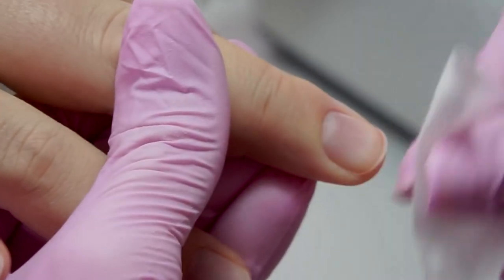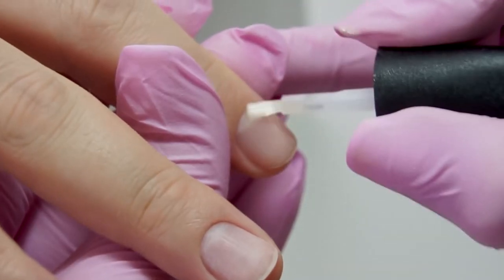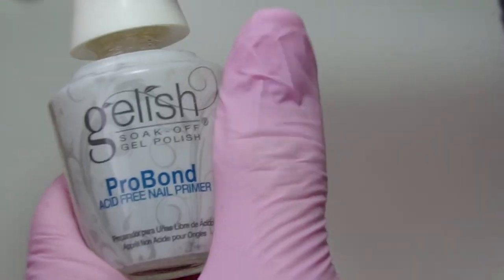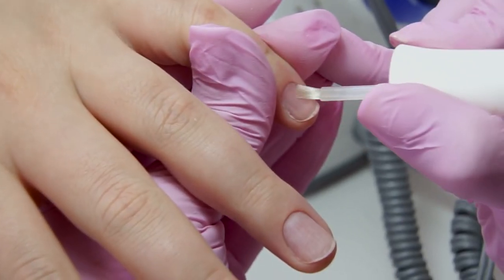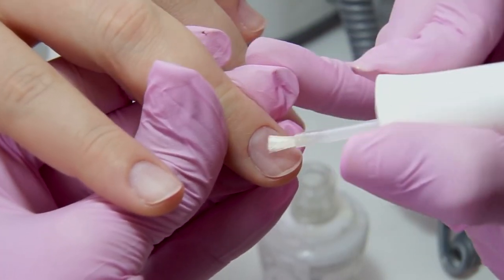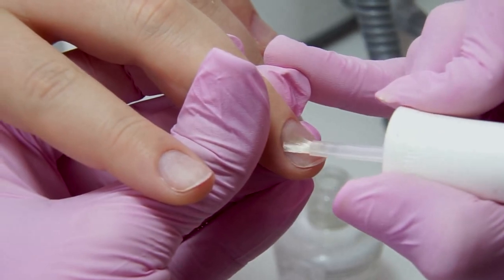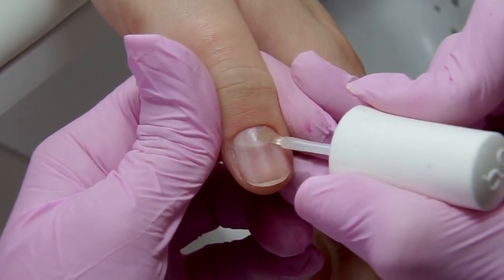I degrease the nail plate and apply a dehydrator and an acid-free primer to improve the bonding. This time, I've decided to do both hands at once. I usually work on one hand while filming a video, but I want to see how fast I can sculpt the nails with such a non-woven material.